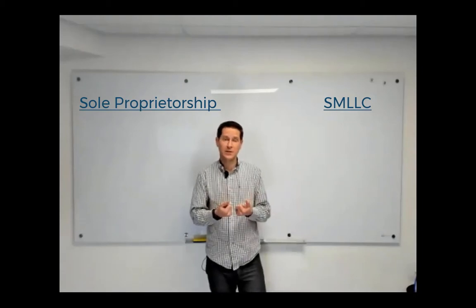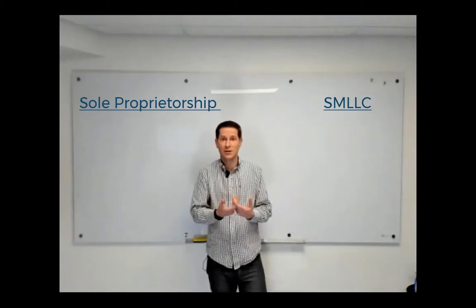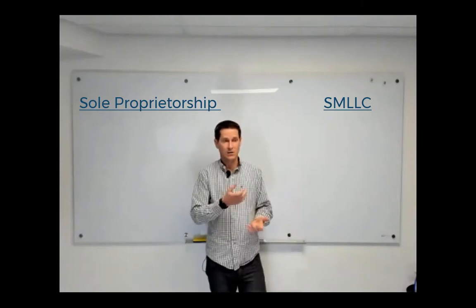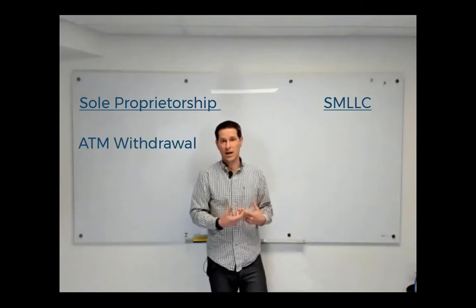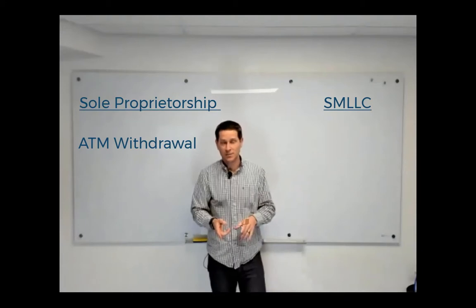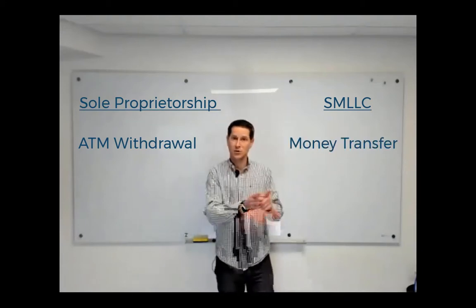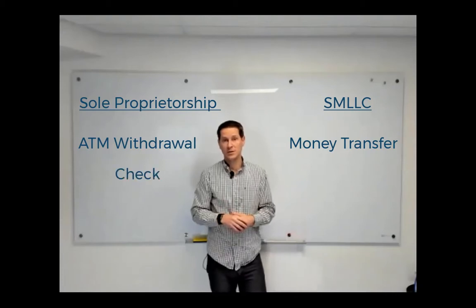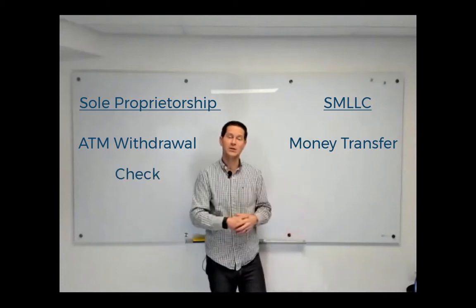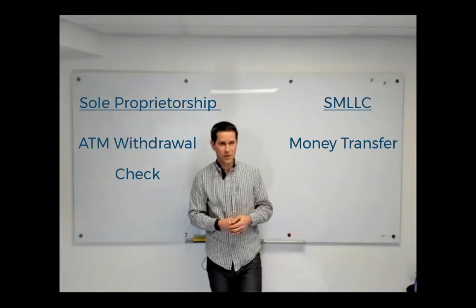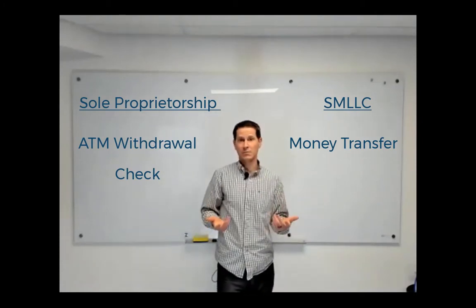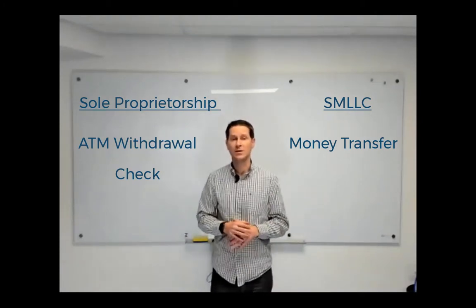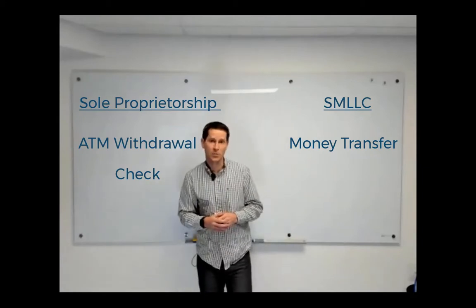You're treated the same for tax purposes, and the way to pay yourself is just pulling money out of the company. Go to the ATM, withdraw cash, transfer money from your business account to your personal account, or write yourself a check out of the business account and deposit it into your personal account. Those are all legitimate, proper ways to pay yourself from an LLC or from a sole proprietorship.